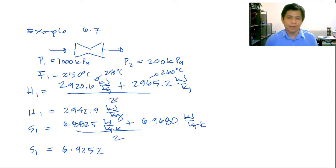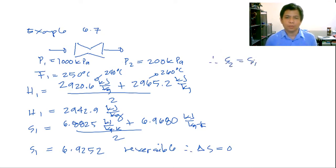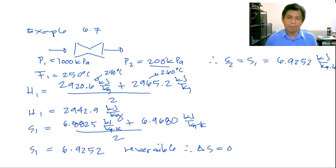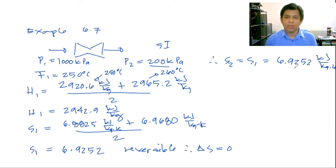Now go to the 200 kPa section of the superheated steam SI table. Look for where S = 6.9252 kJ/kg·K falls. The saturated liquid entropy at 200 kPa is 1.5301, and the saturated vapor entropy is 7.1268. Since 6.9252 falls between these two values, the steam is not yet superheated — it is a two-phase mixture.